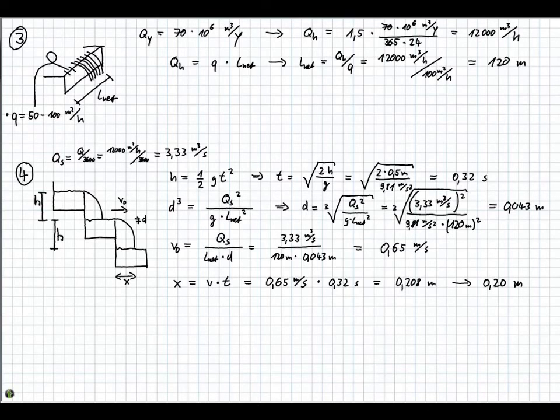So we have 0.2 meters for x. However, we want to calculate the width. And if we look back at the drawing, the width of one cascade is actually twice x, because we want the water to hit the middle of the cascade. So w equals 2x, which is 2 times 0.2 meters. So the width of one cascade is 0.4 meters.